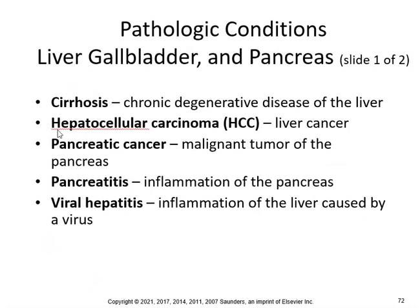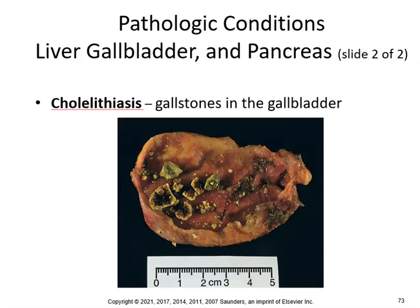More diseases. Cirrhosis — chronic degenerative disease of the liver. Hepatocellular carcinoma is liver cancer. Pancreatic cancer — malignant tumor of the pancreas. Pancreatitis — inflammation of the pancreas. Viral hepatitis — inflammation of the liver caused by a virus. And here's cholelithiasis, which are gallstones in the gallbladder. Some people have had the gallbladder removed.